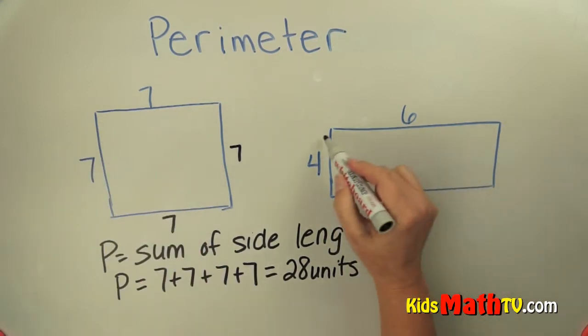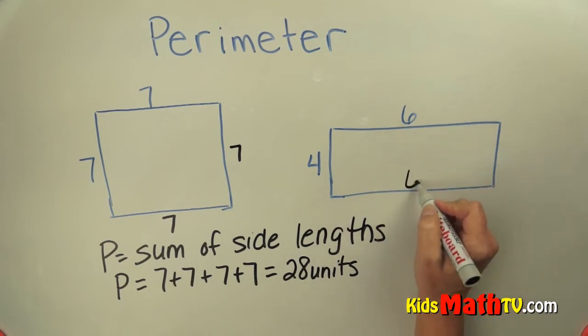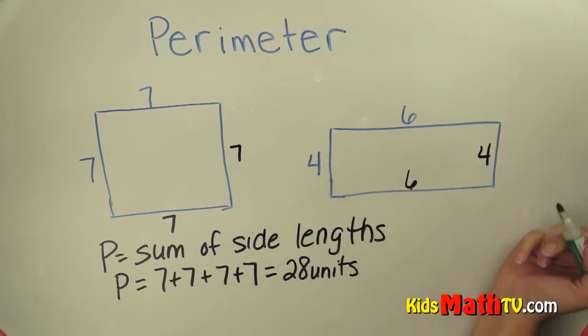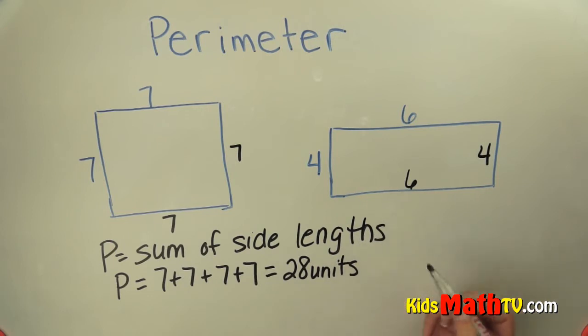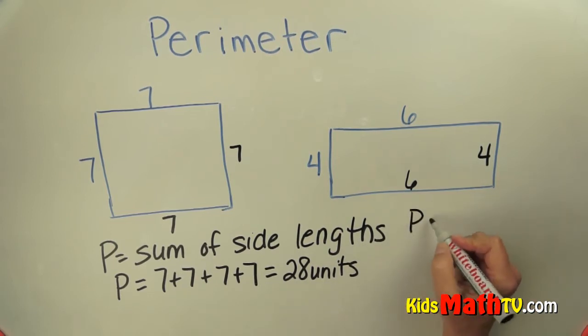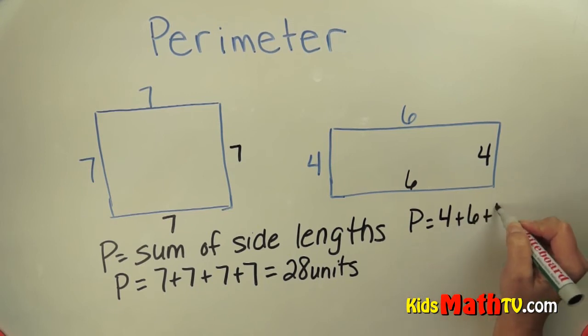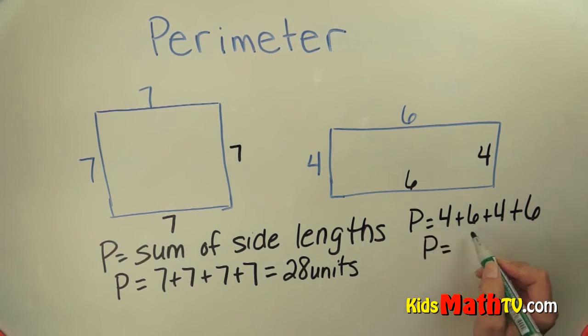This rectangle, I know that this side is the same as this side and this side is the same as this side. So again, the perimeter is the sum of the lengths. So to find the perimeter, I would add 4 plus 6 plus 4 plus 6. So that is 10 plus 10, the perimeter equals 20 units.